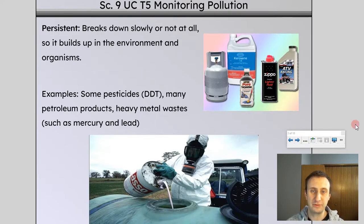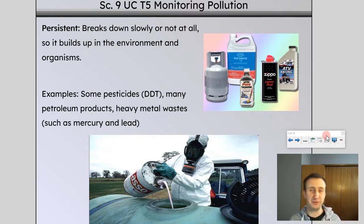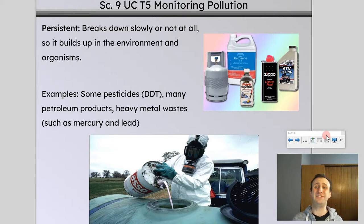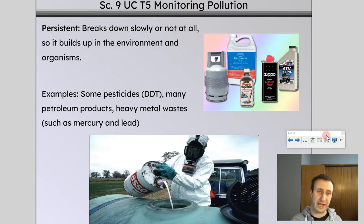Persistent waste breaks down slowly or not at all. It builds up in the environment and in organisms over time because it's not broken down easily. A great example of a persistent pollutant you'd recognize right away is styrofoam — polystyrene takes a super long time to break down. These pollutants will build up in a landfill over time because bacteria and other organisms can't break them down. Some pesticides, as you learned in your pesticide project, are persistent pollutants.